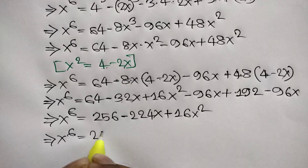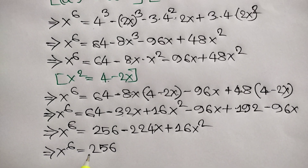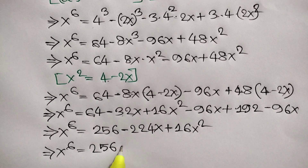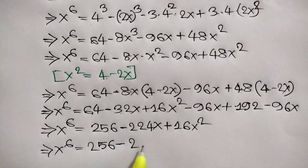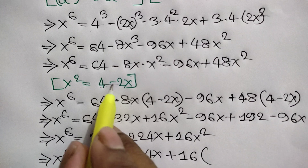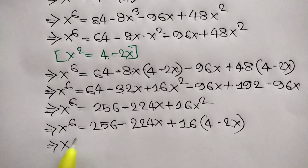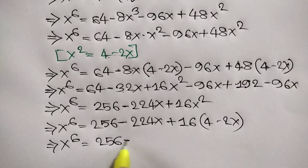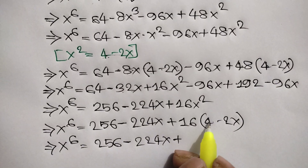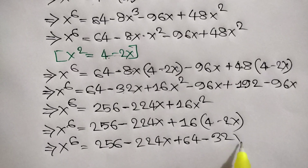So x to the power 6 equals 256 minus 224x plus 16 times x squared, which is 4 minus 2x. Expanding: x to the power 6 equals 256 minus 224x plus 16 times 4 is 64 minus 32x.